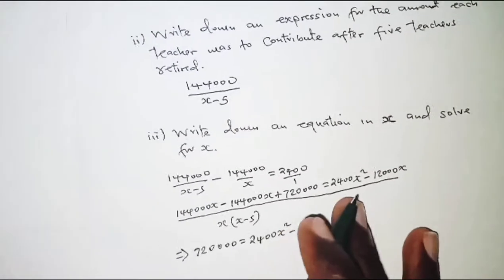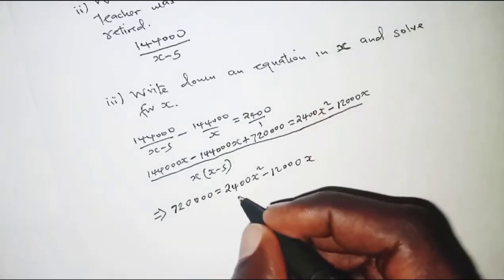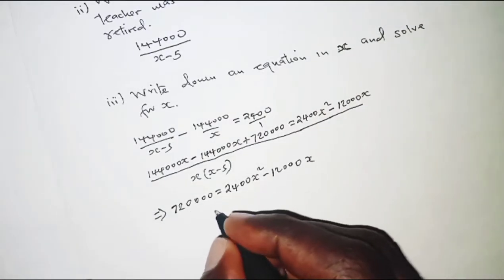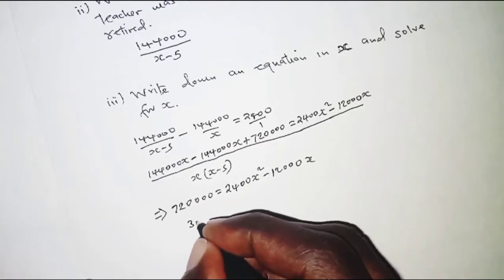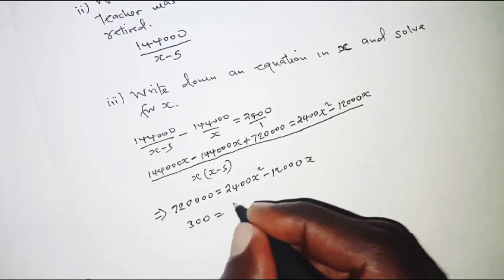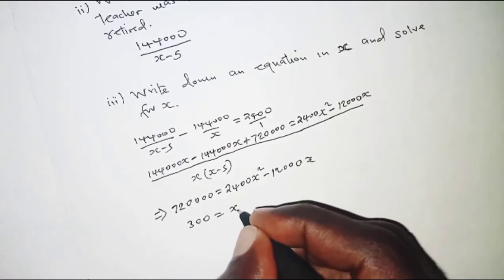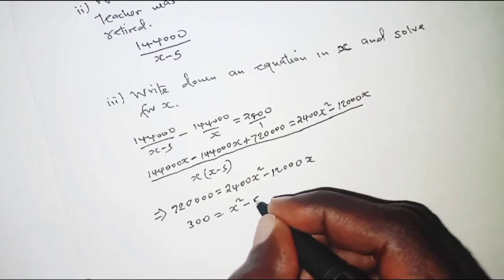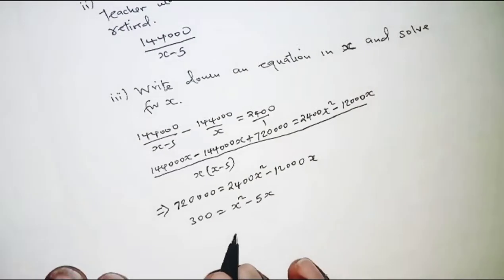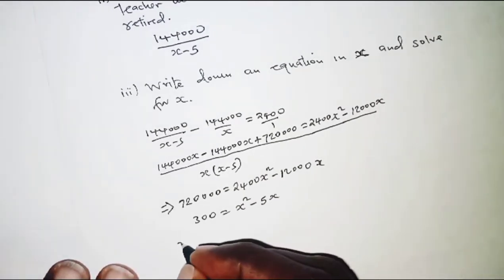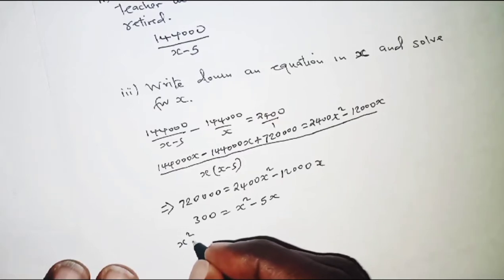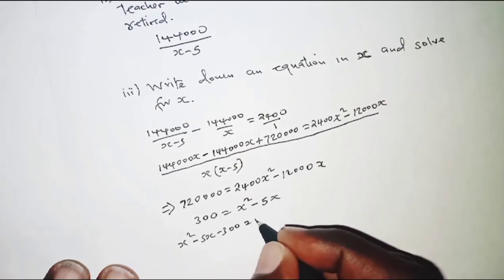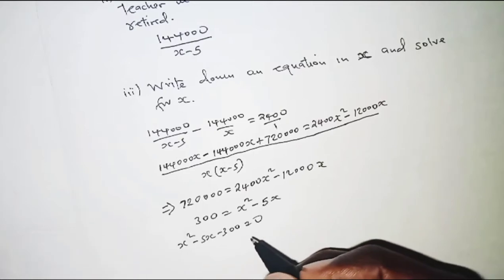This simplifies to 720,000 equals 2,400x² minus 12,000x. Dividing all through by 2,400 gives 300 equals x² minus 5x. Rearranging, we have x² minus 5x minus 300 equals 0.